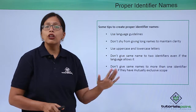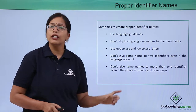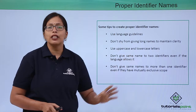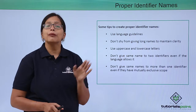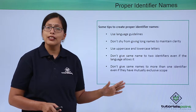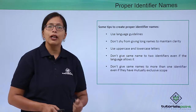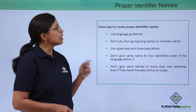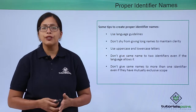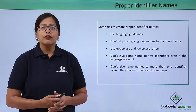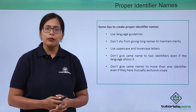For example, one variable holding data and an object name can theoretically have the same identifier name, but please do not give them the same names — you might get confused, or someone else reading your code might get confused. So in this video we have seen how to give proper identifier names. In the next video we are going to cover how to write good comments.